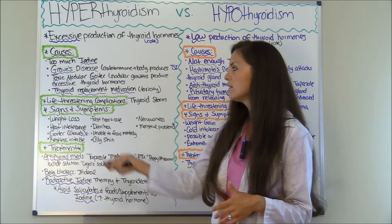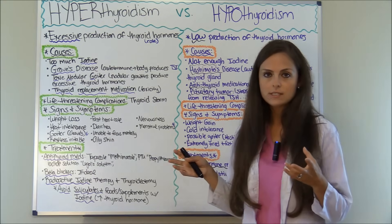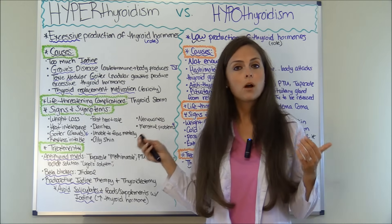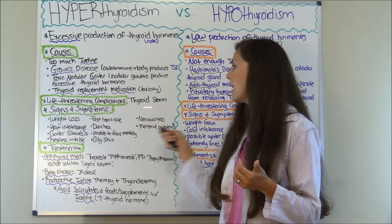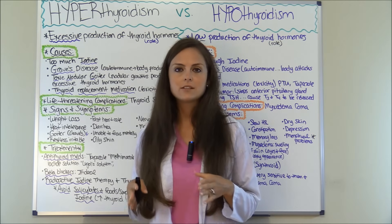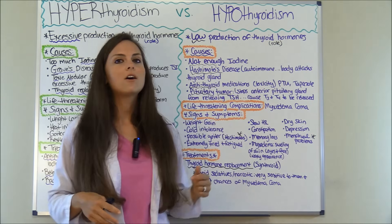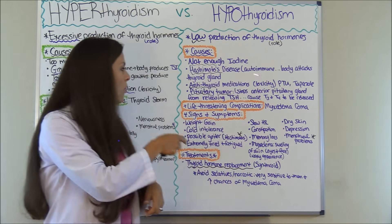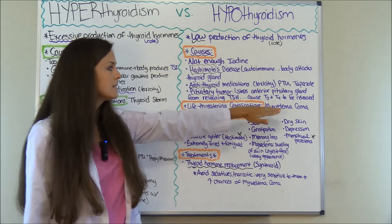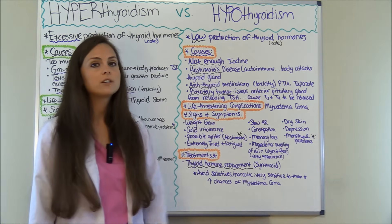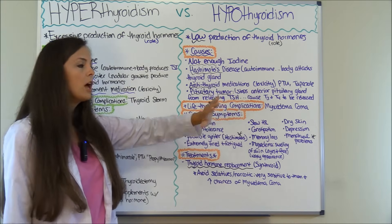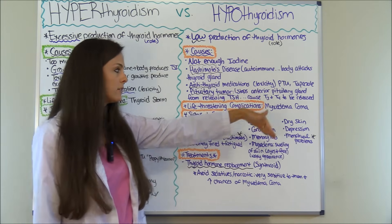What are the life-threatening complications of these conditions? In hyperthyroidism, if not treated properly, the patient can enter into thyroid storm — covered in detail in another video you can access via the card. The life-threatening complication of untreated hypothyroidism is myxedema coma, which is also covered in depth in a separate video including the pathophysiology and nursing interventions.